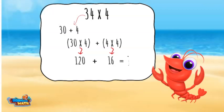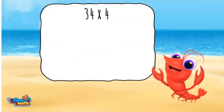I add the products of the parentheses together for a total of 136. There is still another way: the number 4 can be broken apart into 2 plus 2. The number 2 is easy to work with because you just double the number being multiplied.